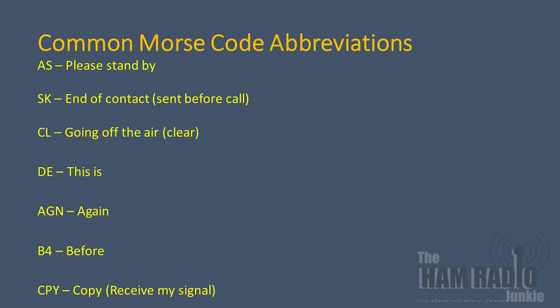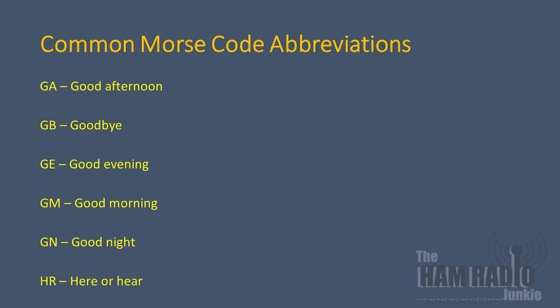You would use SK at the end of your contact to indicate that you've gone silent key — in other words, you've stopped transmitting. It's not uncommon for stations to greet each other with an abbreviation highlighting the time of day, such as G-A for 'good afternoon'. Occasionally somebody will throw in a curveball such as G-B, which rather than 'goodbye' may mean 'God bless'.